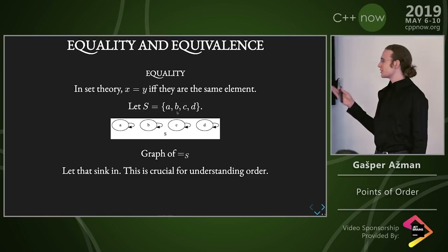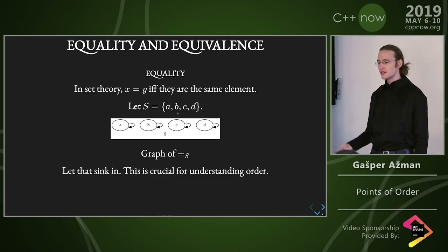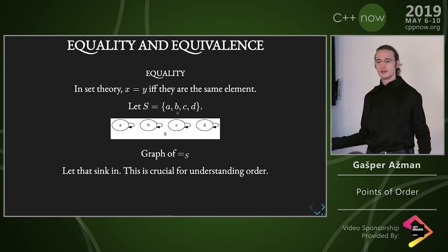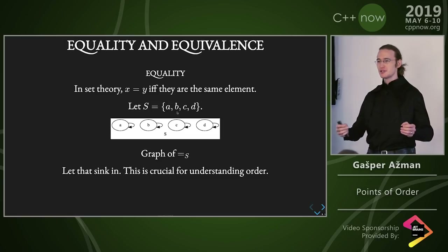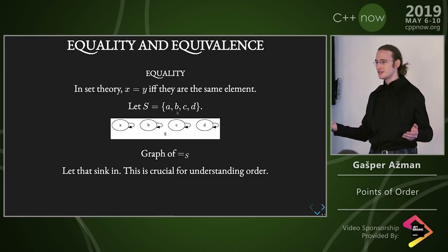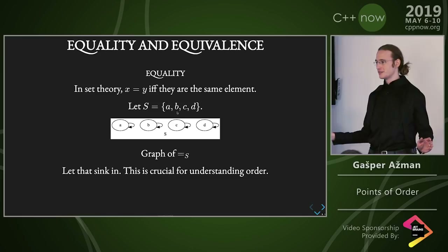So let's start with what is equality, and then we'll figure out what equivalence is. Equality in mathematics is a perfectly clear notion. You have a set. Elements of the set are distinct, because that's how sets are defined. And they're always equal to themselves. That's equality. Done. End of story.